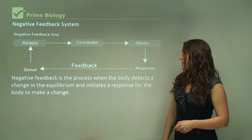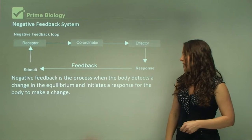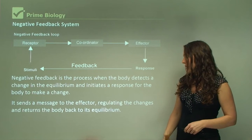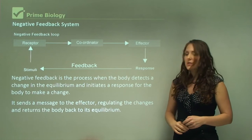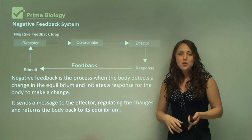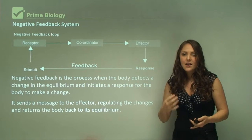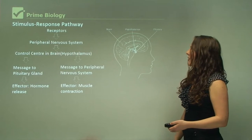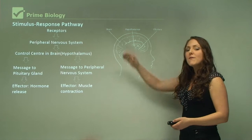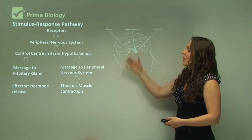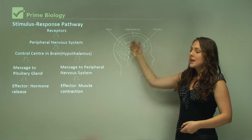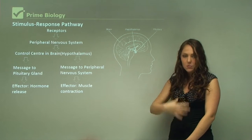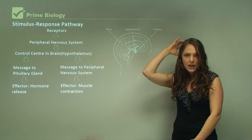Negative feedback is the process when the body detects a change in equilibrium and initiates a response. It sends a message to the effector regulating the changes and returns the body back to its equilibrium. The effector might be nerves or glands, and glands release hormones to make a change. In the stimulus-response pathway, receptors detect the stimulus and send the signal to our peripheral nervous system — the nerves in our arms and legs.